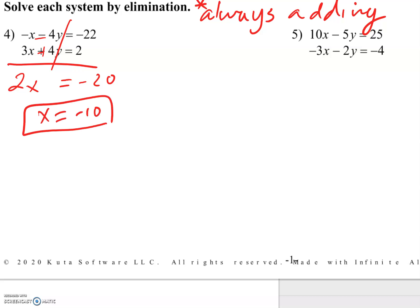Plug it back into either one. Go with the bottom one. We've got negative 30 plus 4y equals 2. Add 30 to both sides. 4y equals 32, so y equals 8. There's our answer.